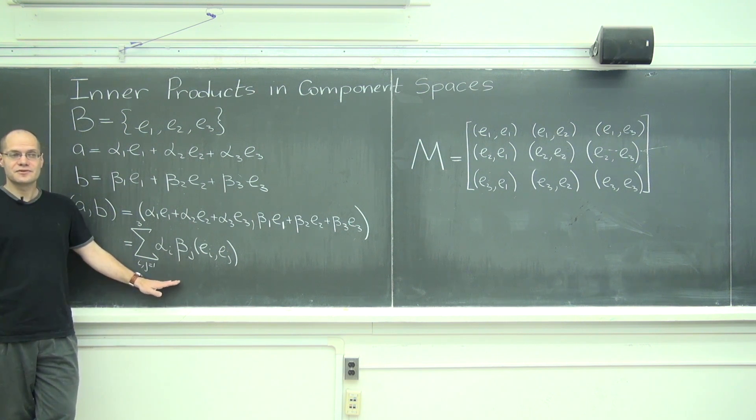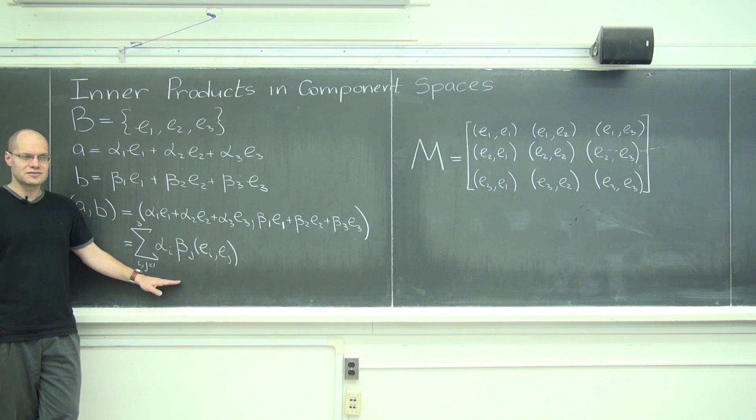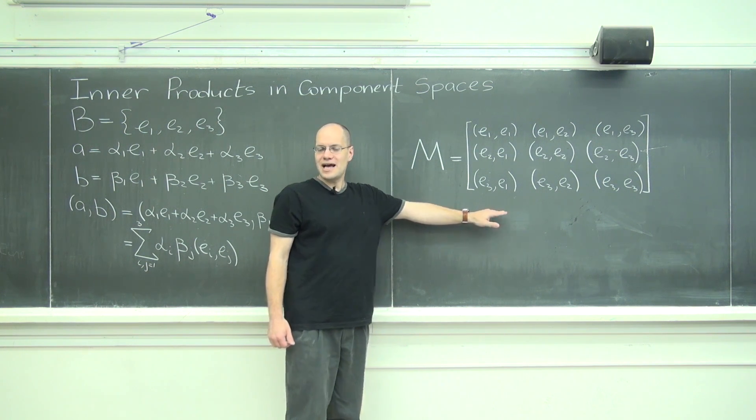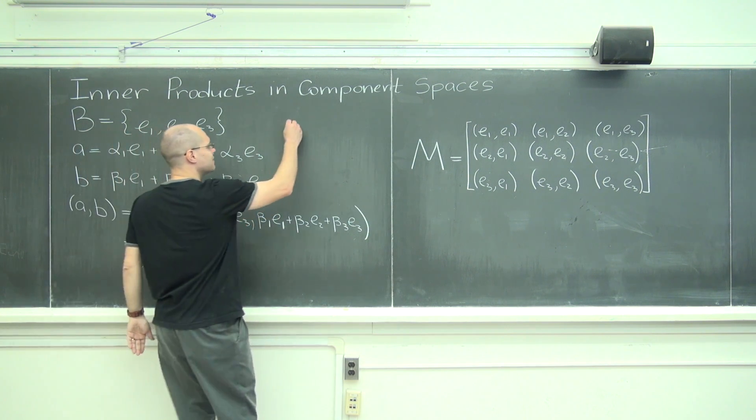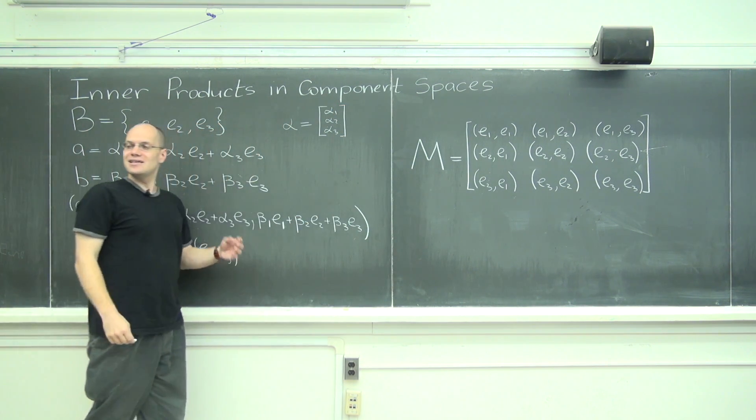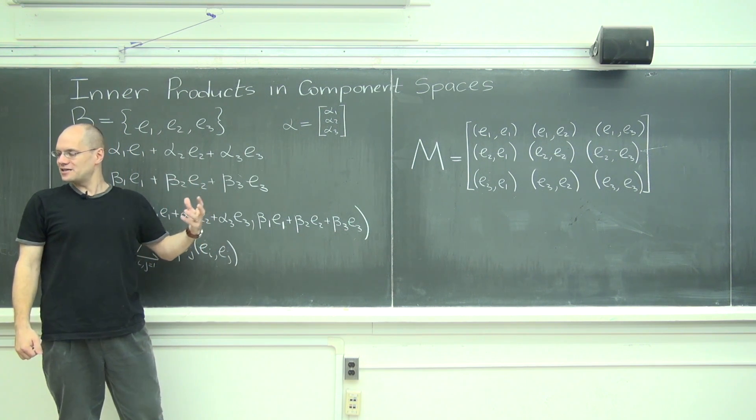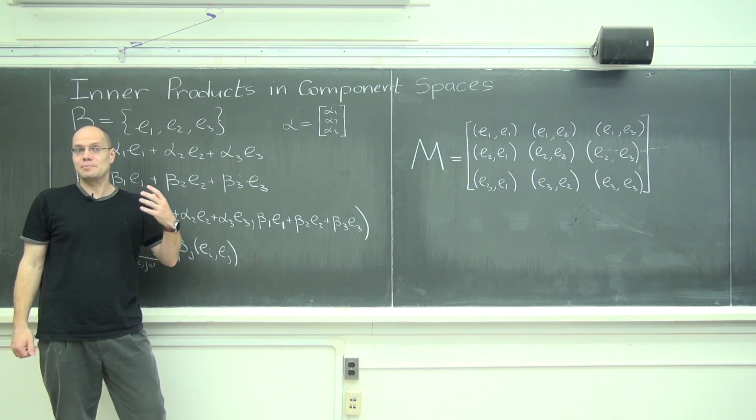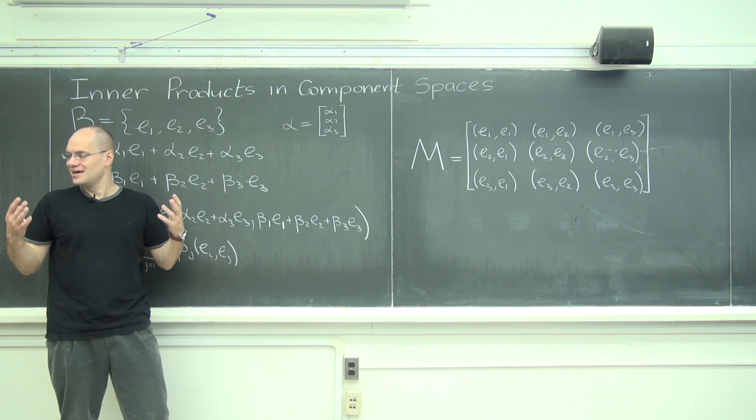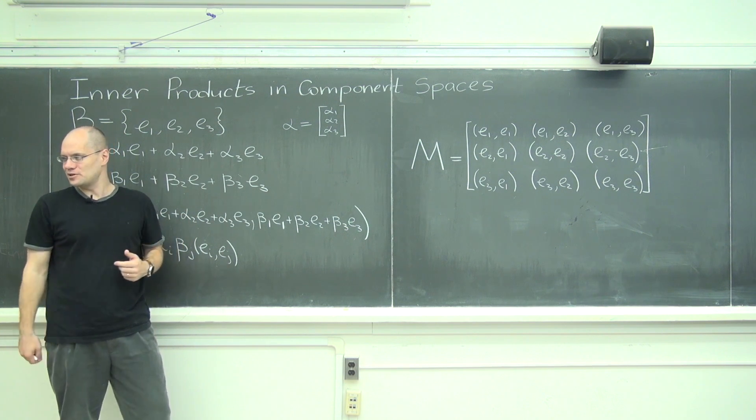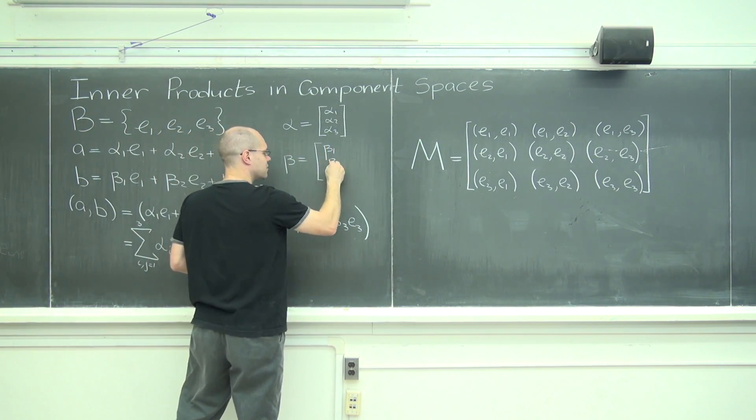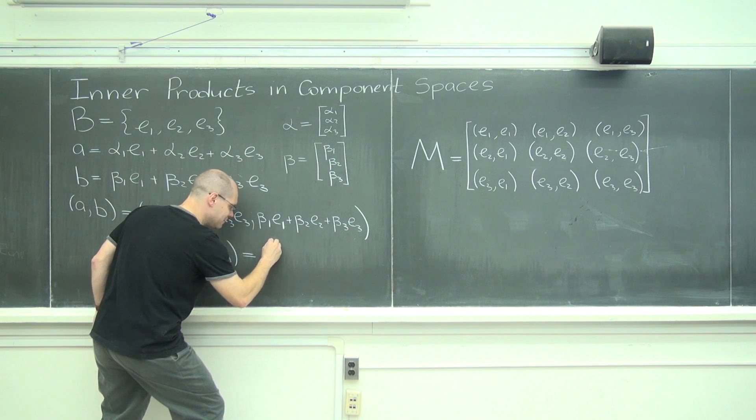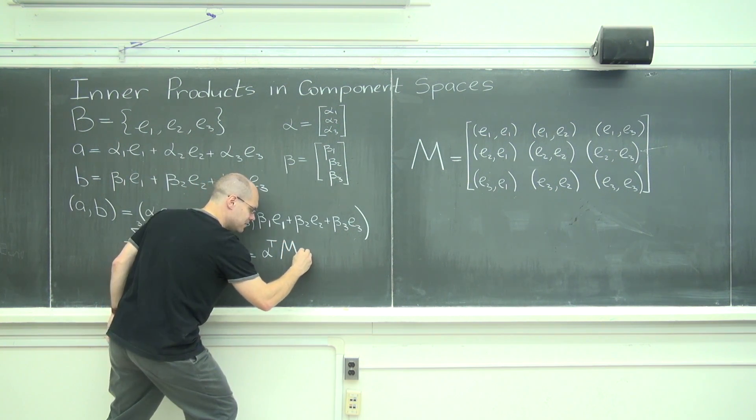And do you see from experience of having done this two or three times already in this course, that it's just a matrix product involving this very matrix? That's what happens if I think of alpha 1, alpha 2, alpha 3 as a vector in R3. Alpha is the components of A with respect to this basis. In other words, alpha is A in component space. You can say that it's the representation of A in component space. But you can just say alpha is A in component space. And beta, you guessed it. Okay, so this sum of nine terms is nothing else but alpha transpose, that same matrix M, beta.